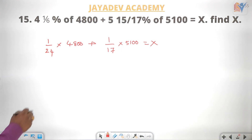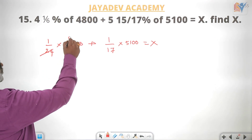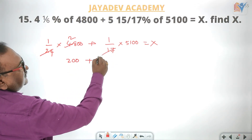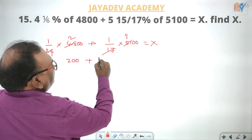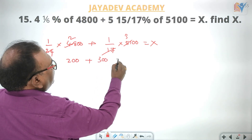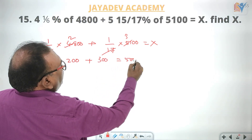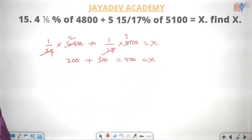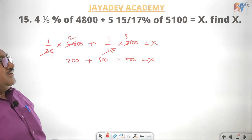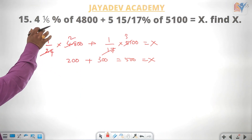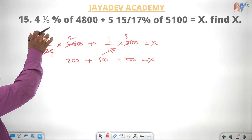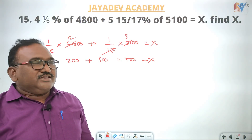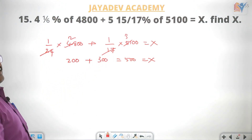So here, 2 is here, that means 200. Plus 17, 3 is here, that means 300 is equal to 500, and then the x value is 500. This fraction is 4; 1 by 6 is 20 percentage equal fraction. So this problem is easier.